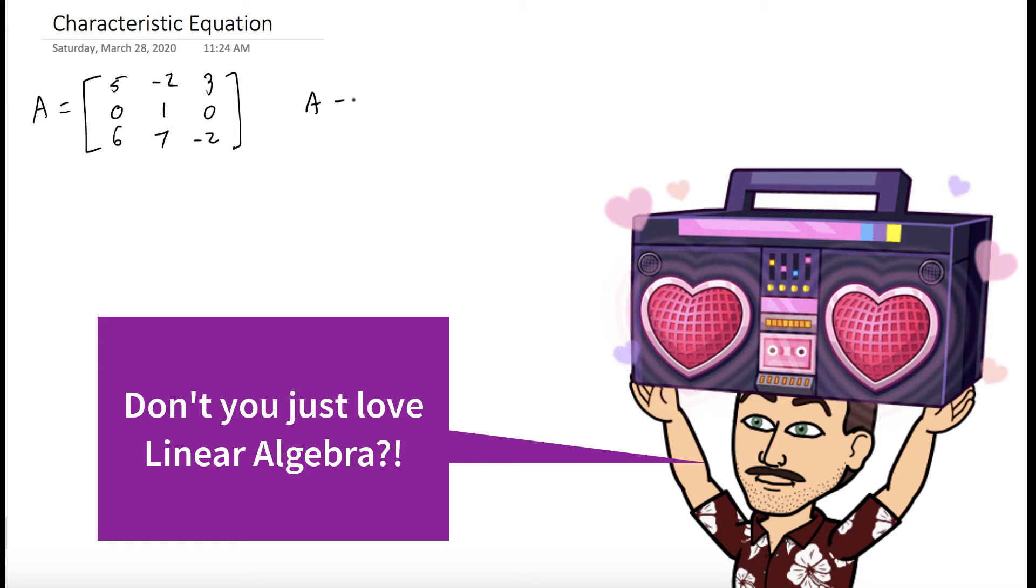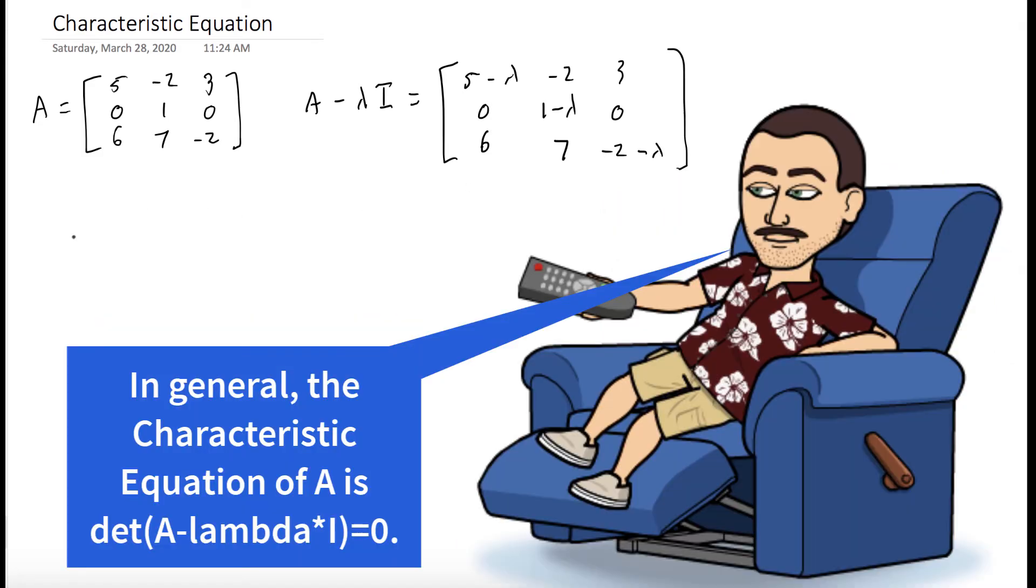So the way we find this is we first want to find the matrix A minus lambda I. So we take our matrix A and we subtract the number lambda from each of the entries in the main diagonal. And we want to find the determinant of this matrix.